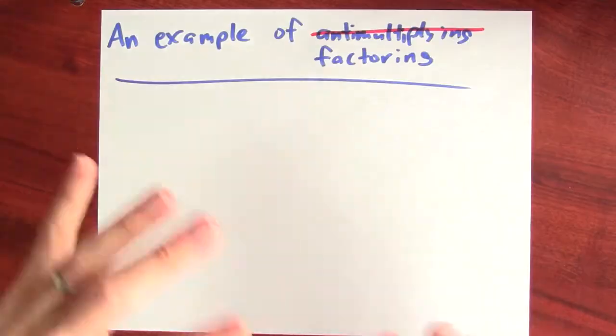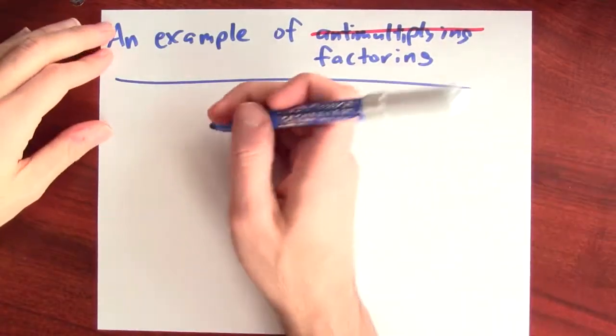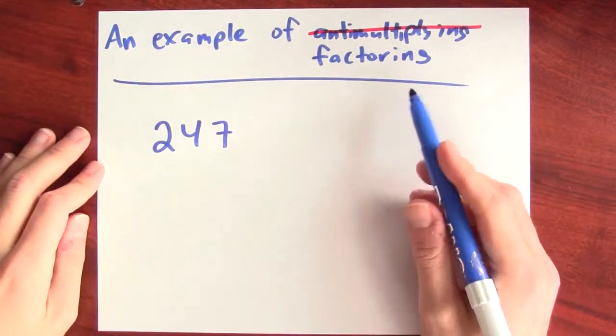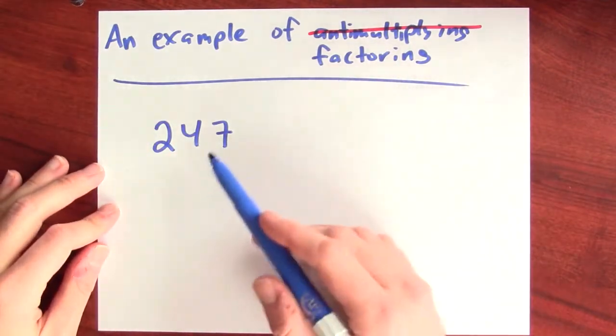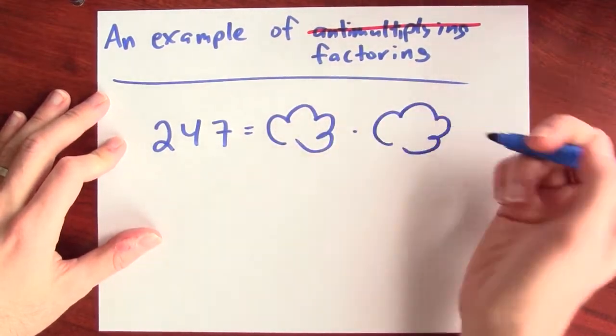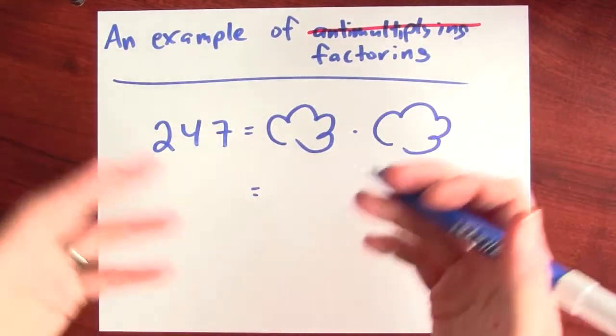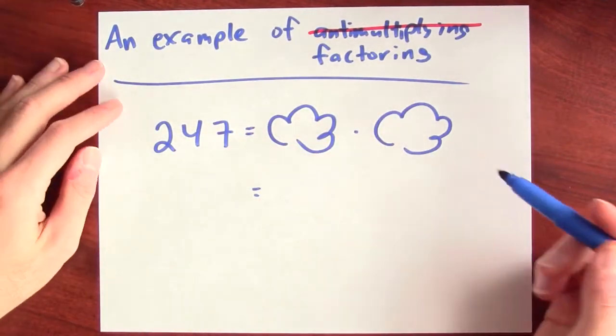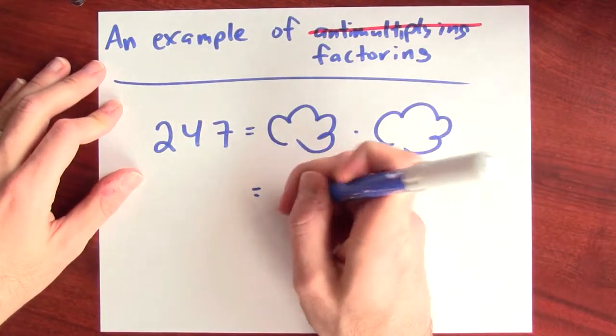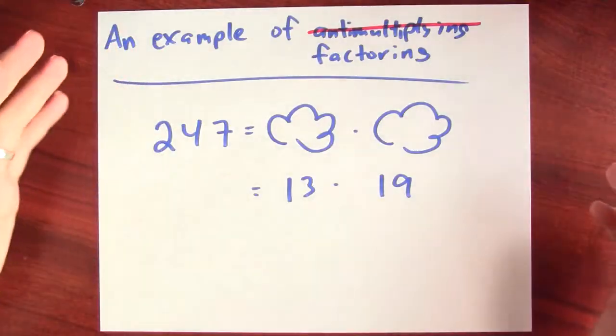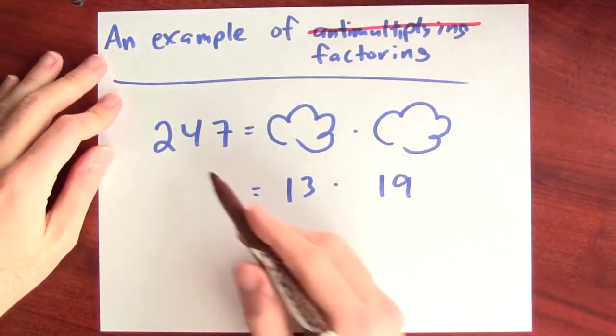Here's an example. Suppose that somebody gives you a number like 247 to anti-multiply that number, which is just my crazy way of saying factoring this number, means I want to write this as something times something else. You sort of play around with this and you can try dividing this by various numbers and you'll eventually hit on 247 being 13 times 19. Well, that seems to have come out of nowhere. How did I figure that out? Well basically, I just have to keep trying to divide.